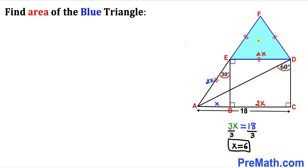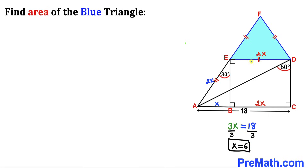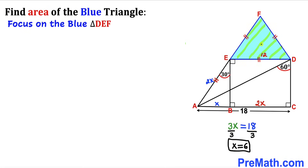Since we're interested in finding the area of the blue triangle, let's go ahead and calculate side length ED. We already found X equals 6, so 2 times X equals 2 times 6, which gives us 12 units. Therefore this side length ED turns out to be 12 units.